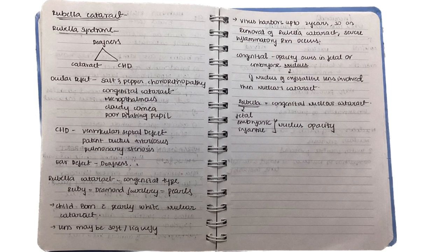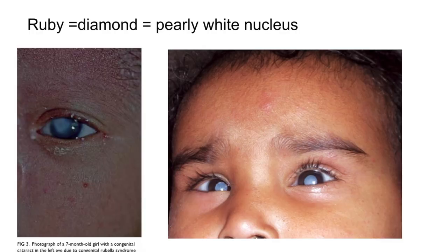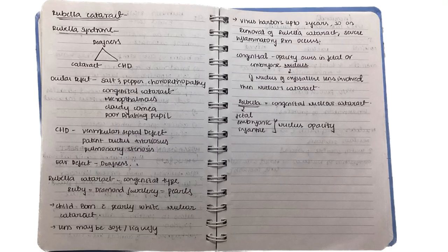Rubella cataract is a congenital type, meaning there is vertical mother-to-child transmission. As a mnemonic, remember 'ruby is a diamond' — and think of pearls. In rubella cataract, the child is born with a pearly white nuclear cataract, meaning the lens is pearly white. As seen in the image, it is a nuclear type of cataract.